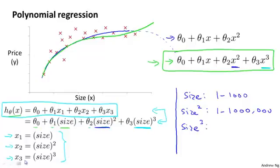And your third feature x3, which is the size cubed of the house, will range from one to ten to the nine. And so these three features take on very different ranges of values, and it's important to apply feature scaling if you're using gradient descent to get them into comparable ranges of values.